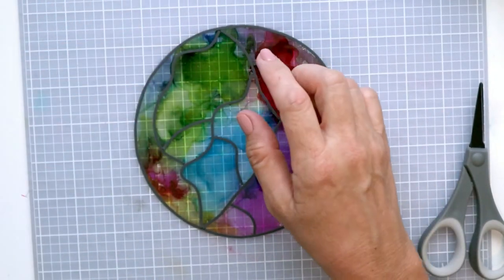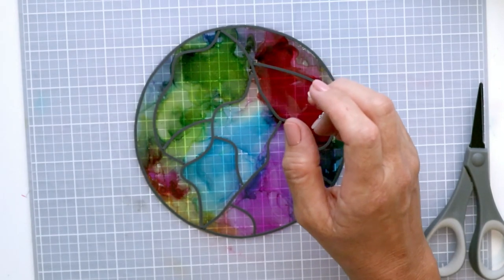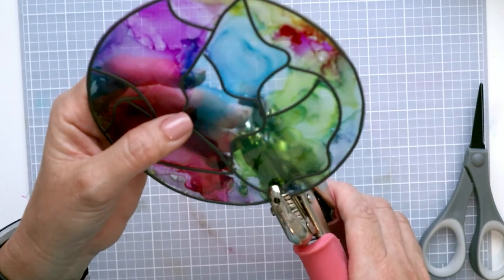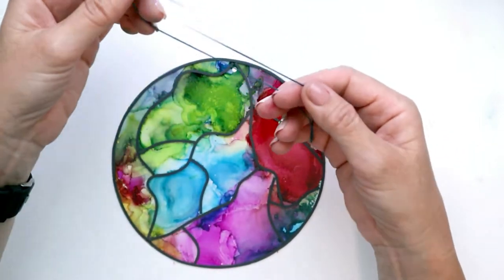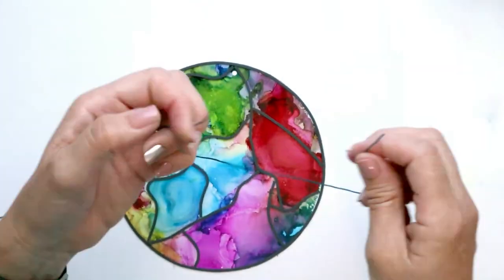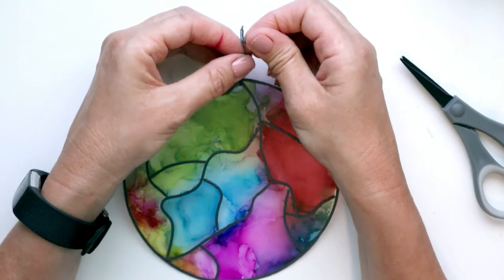One other thing I'll do is I'm going to put a little hole in it right at the top so I can hang it, and then use a tie to hang it. So I have some string. There is your stained glass sun catcher.